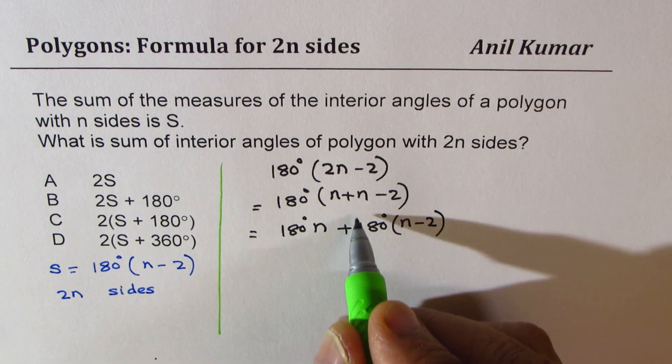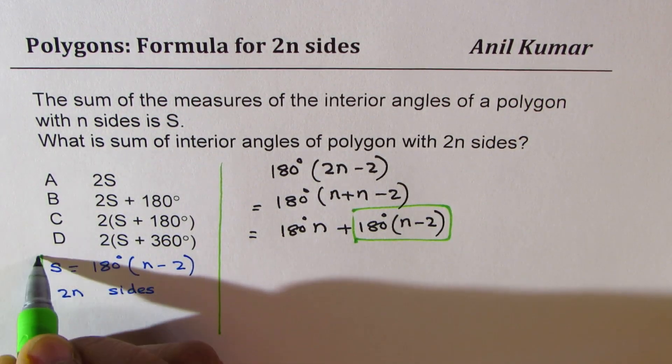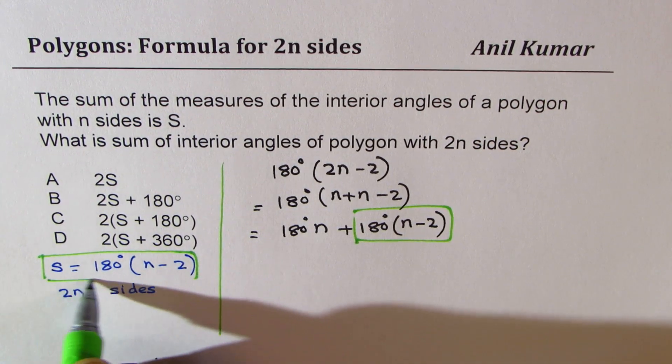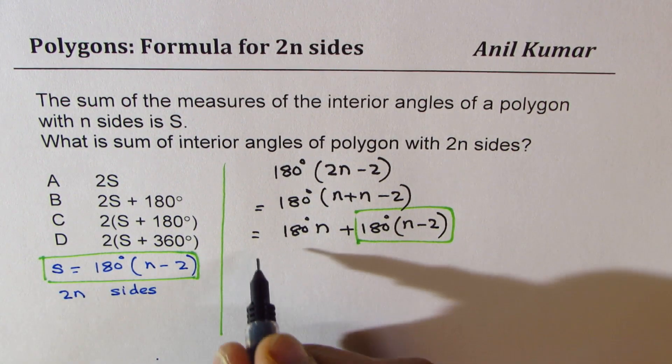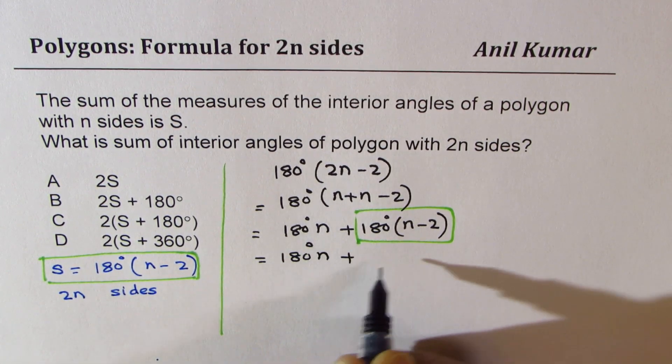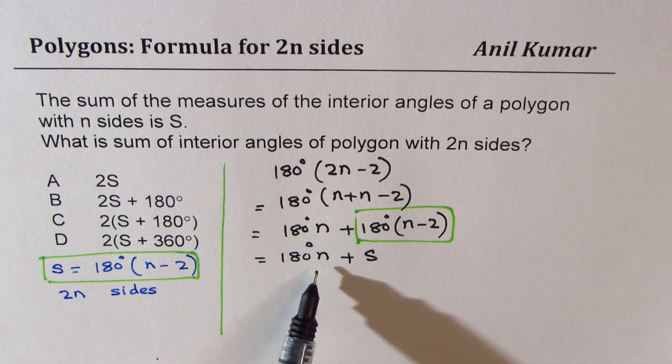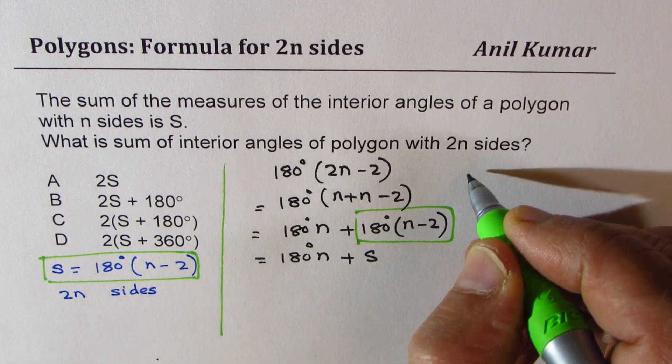Now this portion here, 180 degrees times n minus 2 is equal to S, right? So we could write this as 180 degrees n plus S. But we need to exclude this n also. How do we do that? So to do this, we'll rearrange the original formula.